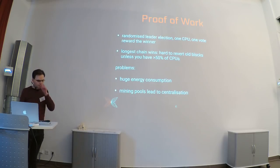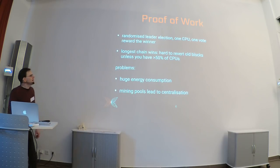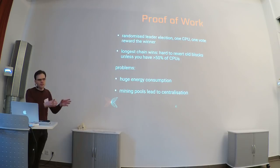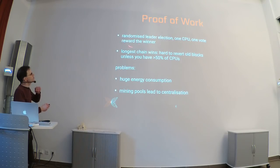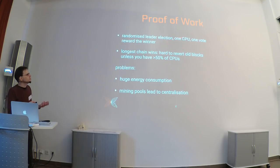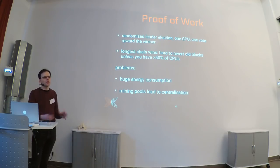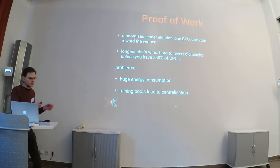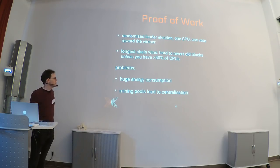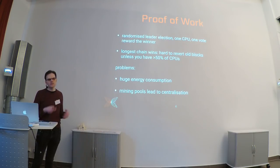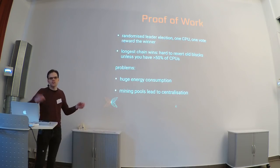You can view proof of work as a race to solve a problem, or as a randomized election where every CPU gets one vote and the chance of being elected is proportional to your CPU investment. This means you can look for other resources to use to elect the next block leader — it needs to be something bounded, because if it costs nothing to participate, you can inflate your chances by registering multiple times.